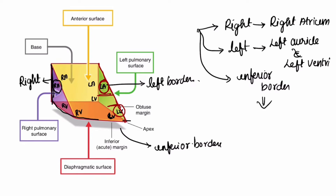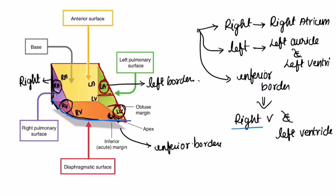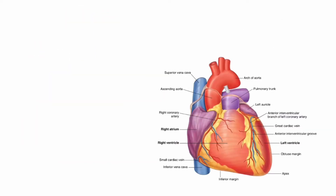The inferior border is formed by the right ventricle and left ventricle. Here is the right ventricle and the left ventricle forming the inferior margin in this diagram.